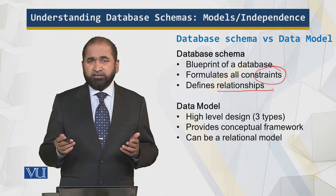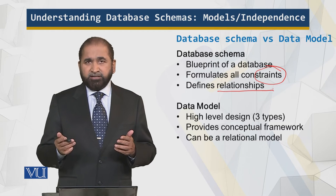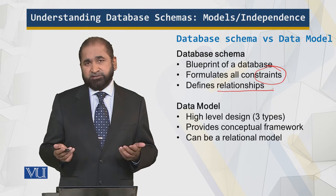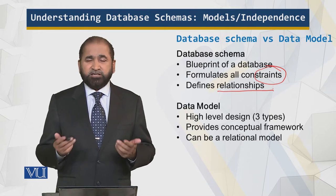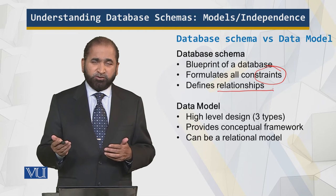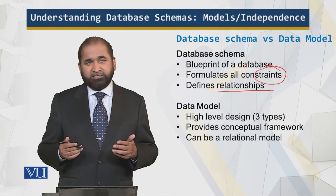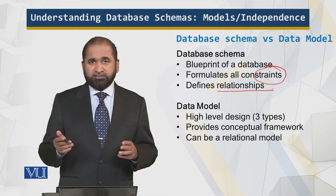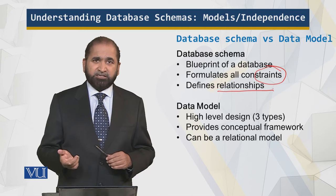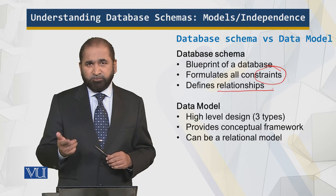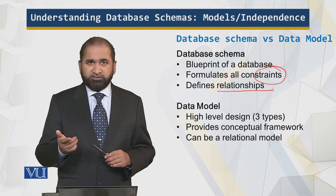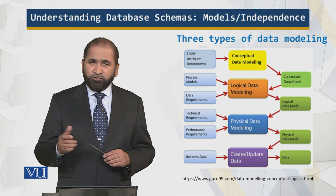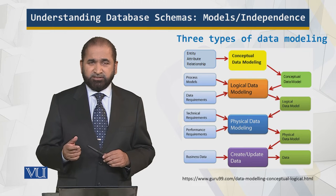The data model is of three types, as I just mentioned, and it provides a conceptual framework. It can be relational or non-relational. When we move to the module about Codd's rules, I'll explain in detail the 0 to 12 numbered Codd's rules and what a relational database is. Now let me explain these three models using a simple example, but first let's look at the process of how we go about it.